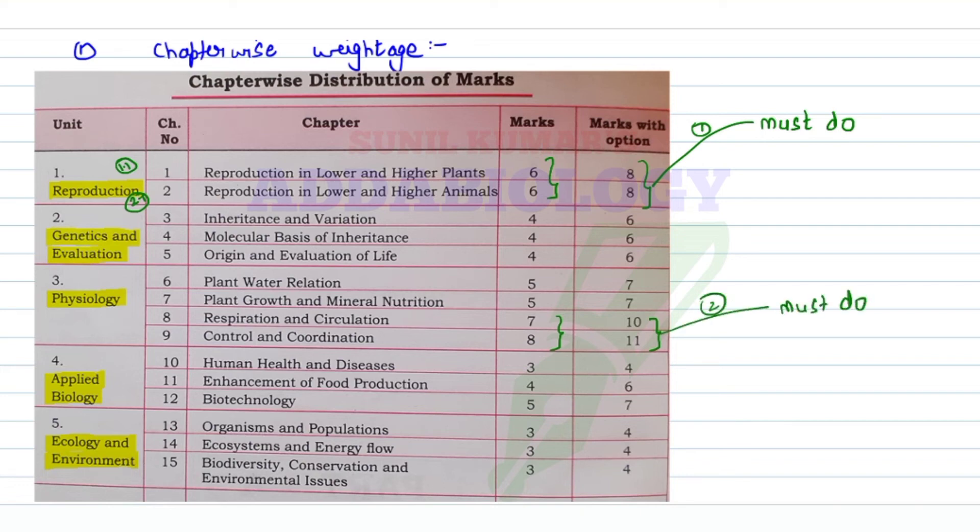The second unit you're going to touch is chapter 8 and 9: respiration and circulation, control and coordination, because together it makes 15 marks. If you do only four chapters - 1, 2, 8, and 9 - you can easily score 27 marks, and with 30 marks in practicals, you'll easily pass.